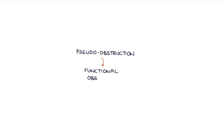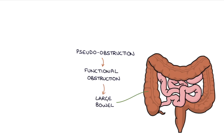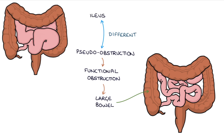Pseudo-obstruction is a term used to describe a functional obstruction of the large bowel where patients present with intestinal obstruction but no mechanical cause is found. This is different to an Ileus which affects the small bowel, and also less common than an Ileus.